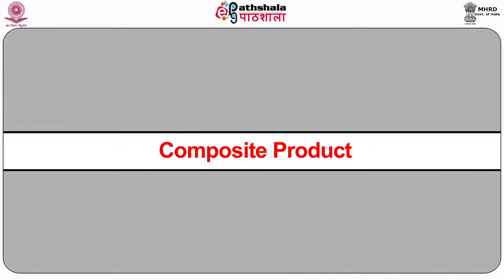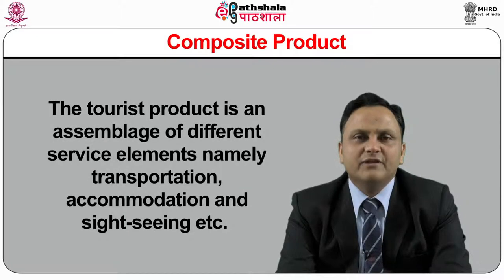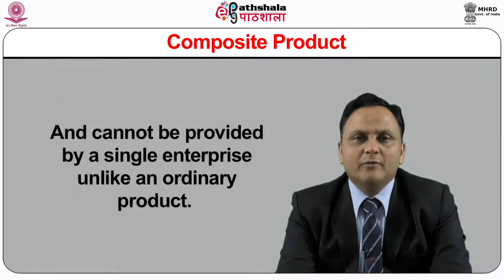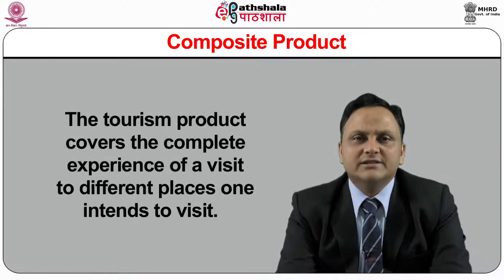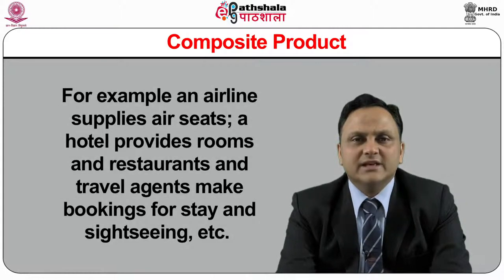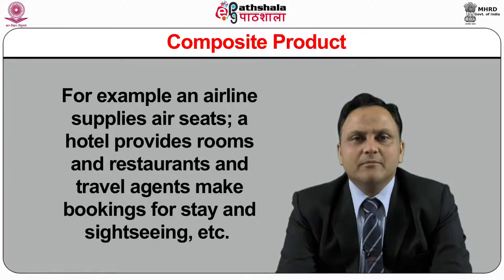Composite product. The tourist product is an assemblage of different service elements, namely transportation, accommodation and sightseeing, etc., and cannot be provided by a single enterprise unlike an ordinary product. The tourism product covers the complete experience of a visit to different places one intends to visit. Various service providers contribute to provision of a collective experience. For example, an airline supplies air seats, a hotel provides rooms, and restaurants and travel agents make bookings for stay, sightseeing, food, etc.